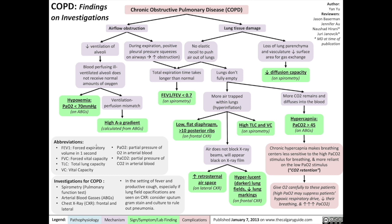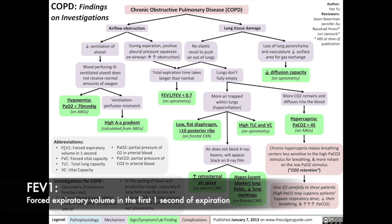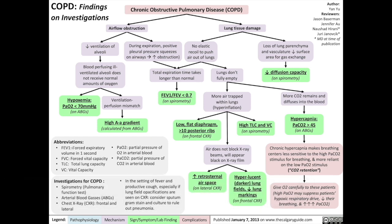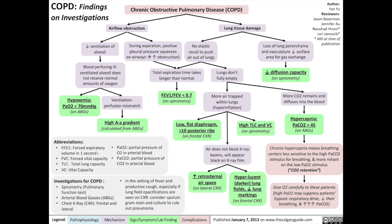When assessing the function of the airways, doctors use the forced expiration test, otherwise known as spirometry. We have patients inhale maximally, then forcefully expire all the air out as quickly as possible. The total volume of air exhaled after a maximal inspiration is called forced vital capacity, FVC. The forced expiratory volume FEV1 is the volume of air exhaled in the first second. We can use FEV1 and FVC to calculate the FEV1/FVC ratio. With airflow obstruction, this ratio is usually lower than normal.